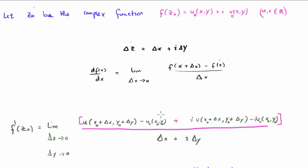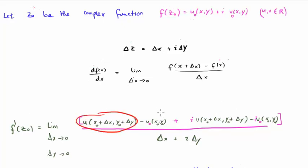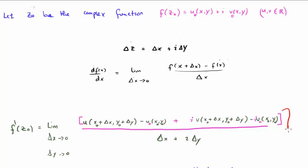Our function f of z sub zero is a function of x and y, so we're going to increment in both x and y and divide by delta z, which is delta x plus iota delta y. We have our original real function u zero and our original imaginary function v zero, and we've incremented them in x and y. We take the incremented real function u minus the original u, and divide by the increment, and similarly for v. This is the definition of the derivative of f of z zero, which is a two-dimensional complex number.